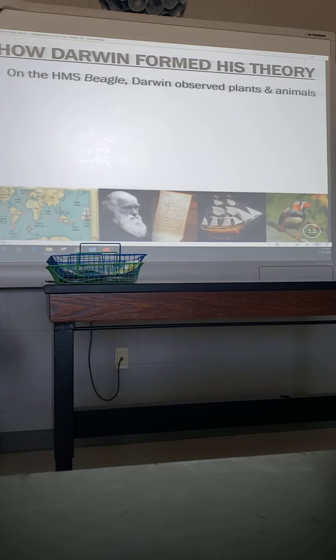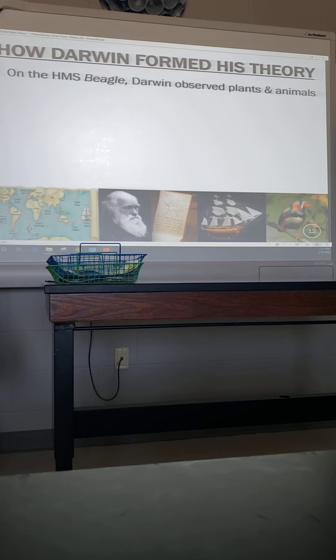Charles Darwin's theory came about when he went on a ship called the HMS Beagle — Her Majesty's Ship, a British vessel. He went to observe different plants and animals along the trip. He wasn't an explorer or a sailor; he was just there as a scientist.